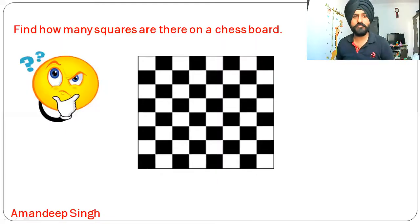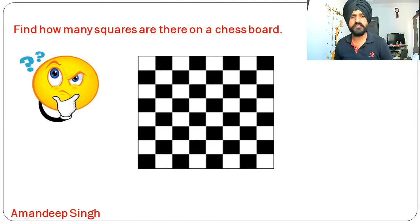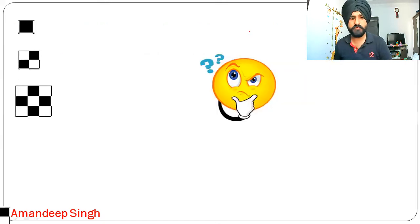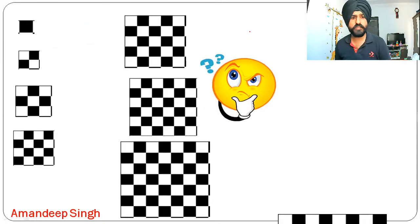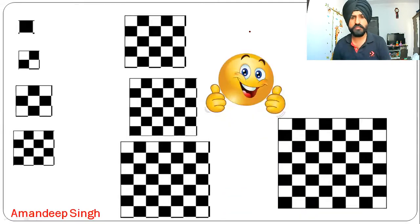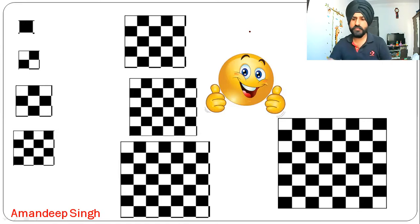Hello everyone. The next question is: how many squares are there on a chessboard? If you think the answer is 64, you are wrong, because you are just counting the smaller blocks, not all the squares. There are different sizes of squares on a chessboard — one unit square, two unit square, three unit square, up to eight unit square. So how do we find how many such squares there are? Let's start.